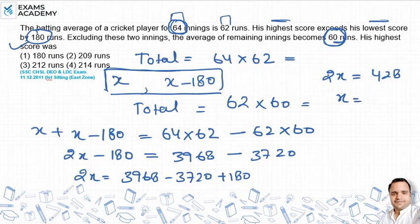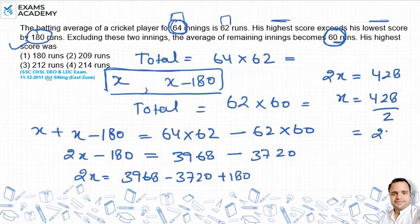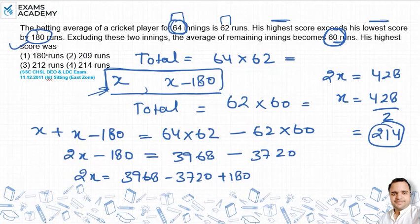x के लिए find out करेंगे तो 2 से divide होगा, means 428 divided by 2 हमें x की value देगा, और वो होगी 214. तो x हमने highest score माना था, it means जो उसका highest score निकल के आता है वो 214 runs है, that is equal to option 4. इस question का सही answer 214 है.